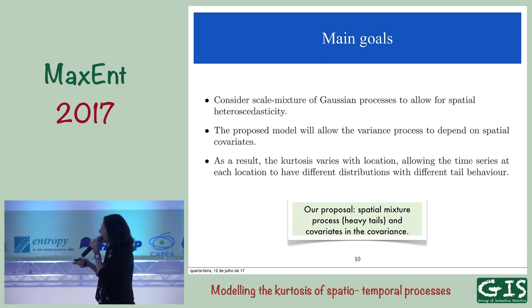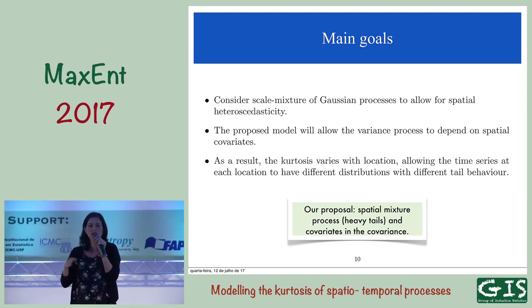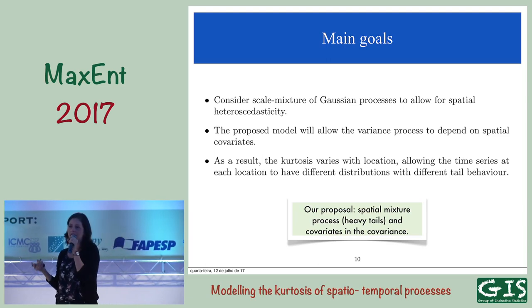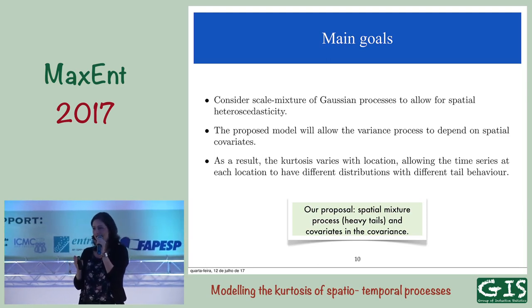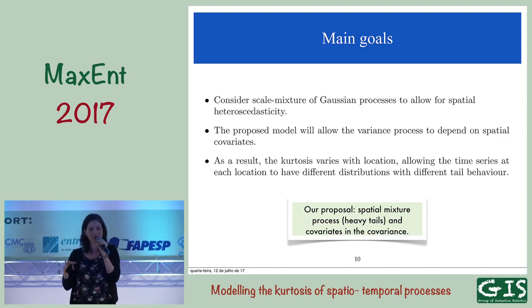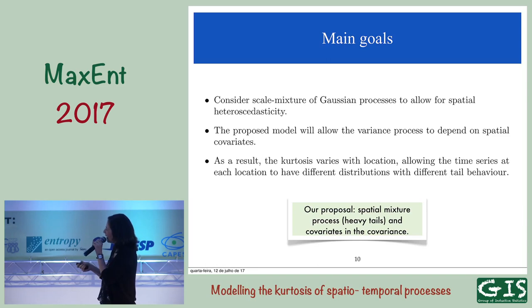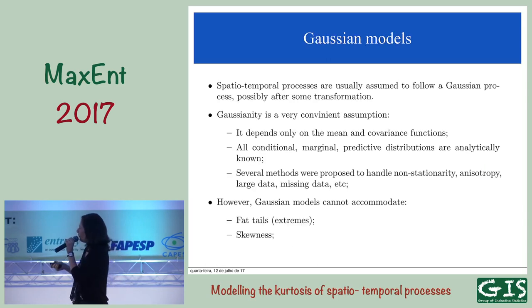So why do we need correlated processes for the variance? If you want to make a prediction close to a location where you have data, you want the variance in that prediction to be similar to the one you had in the observed data — it has to be smooth as well. Our main goal is to consider a scale mixture of Gaussian processes. We have conditional Gaussianity given the variance. If you integrate the variance process, you get fat tails. The extra contribution of this student's project was to include covariates in the variance process, so that covariance depends on covariates.